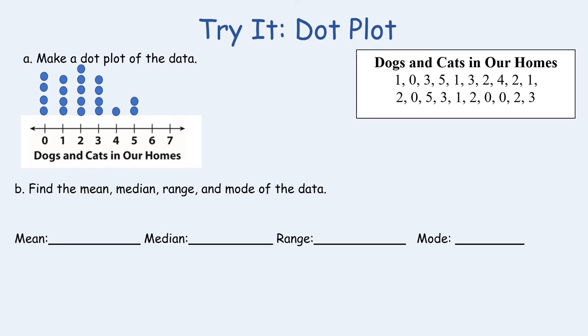Now we are going to find the mean, median, range, and mode of the data so that we can use this to describe some of our data. Let's recall that the mean is the total number of cats and dogs added up divided by how many people were surveyed.